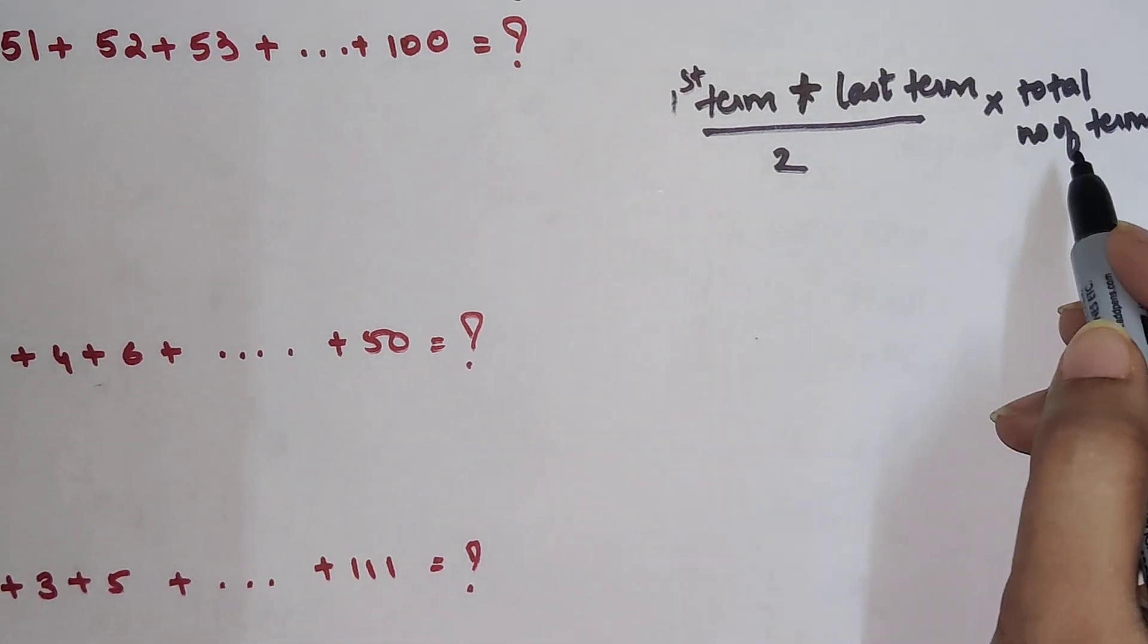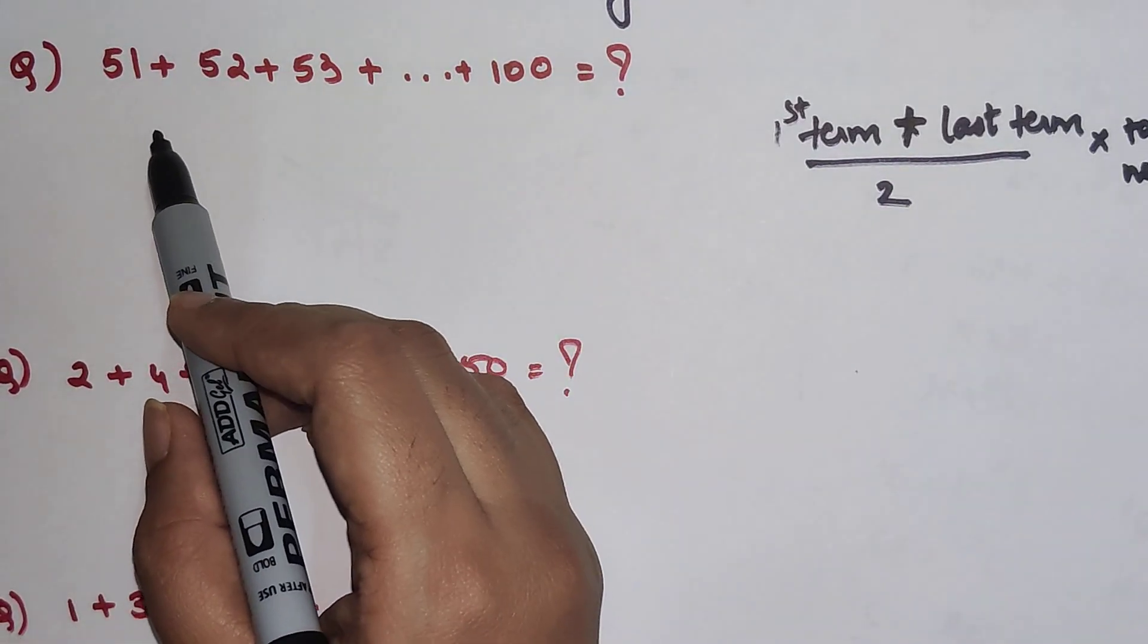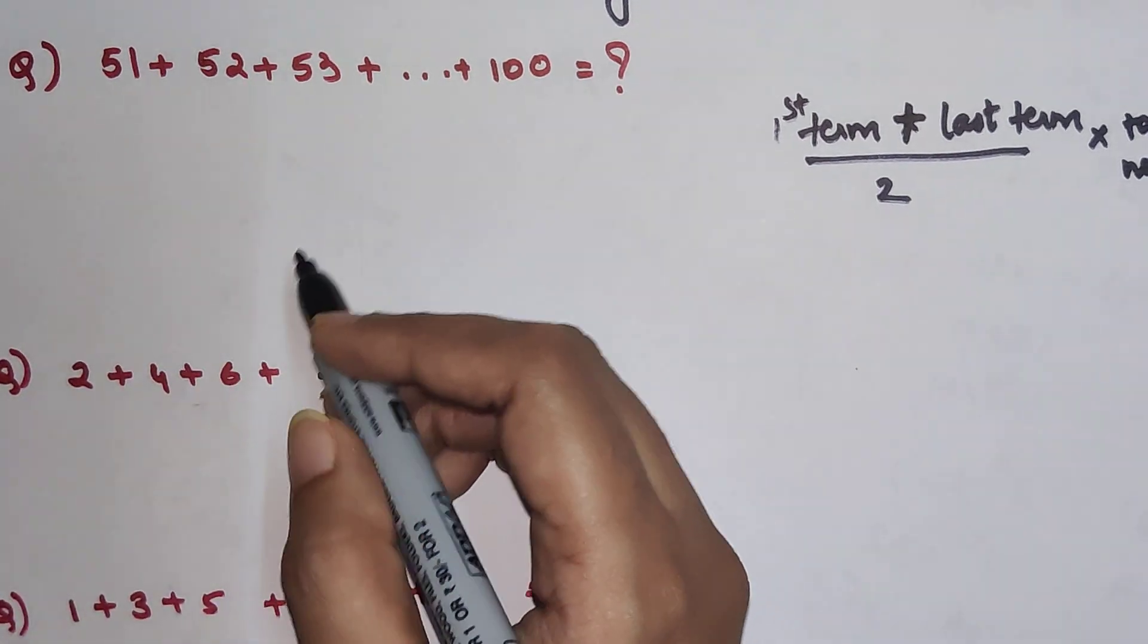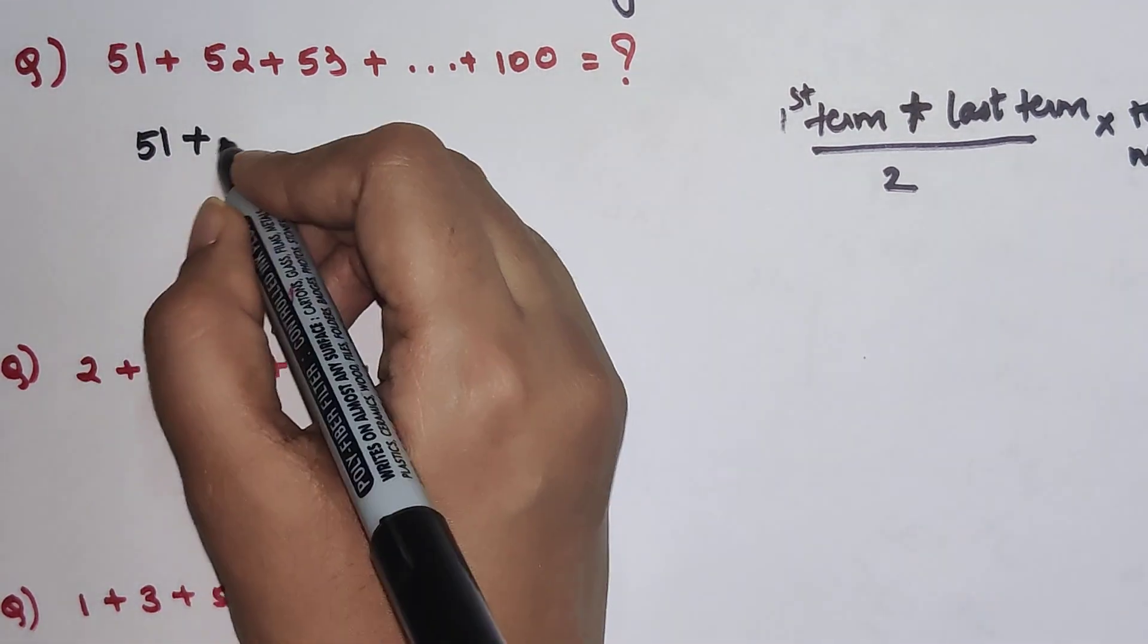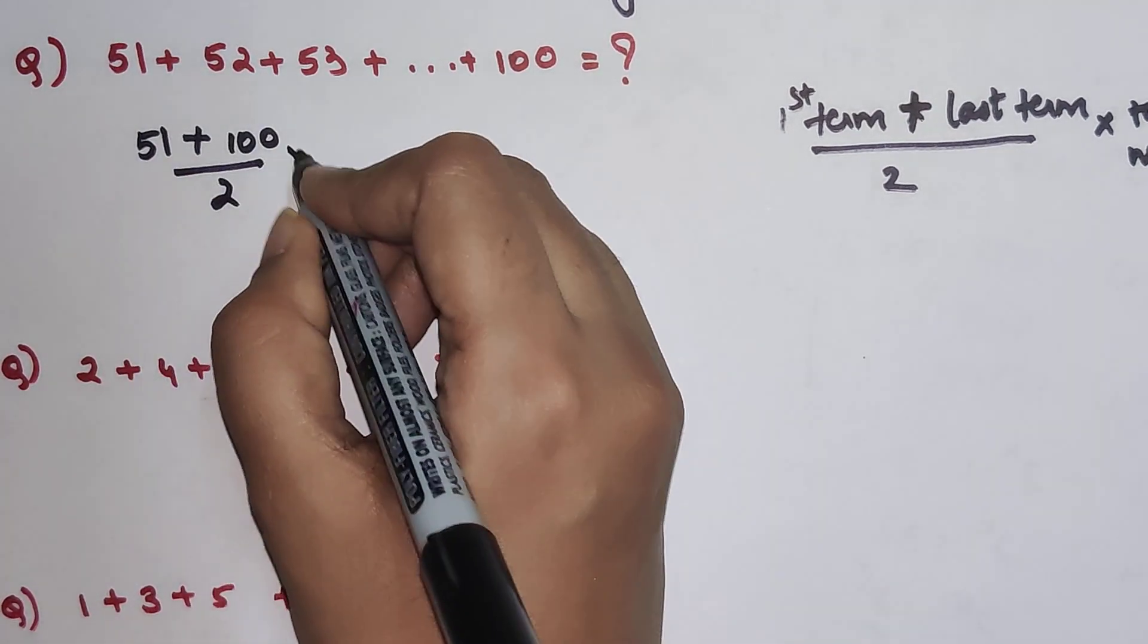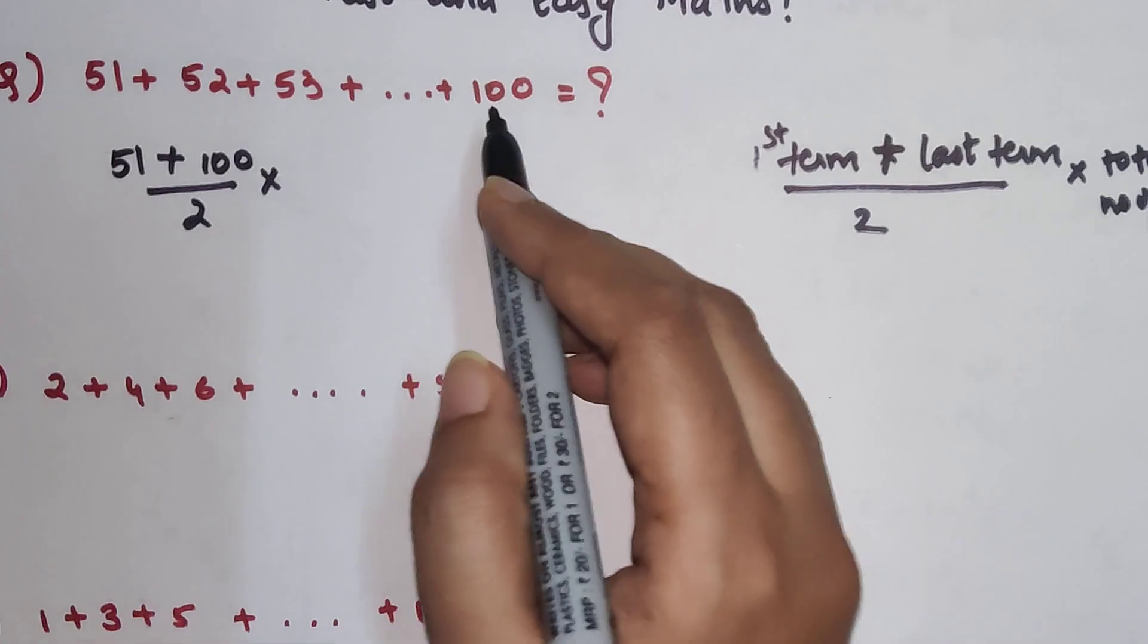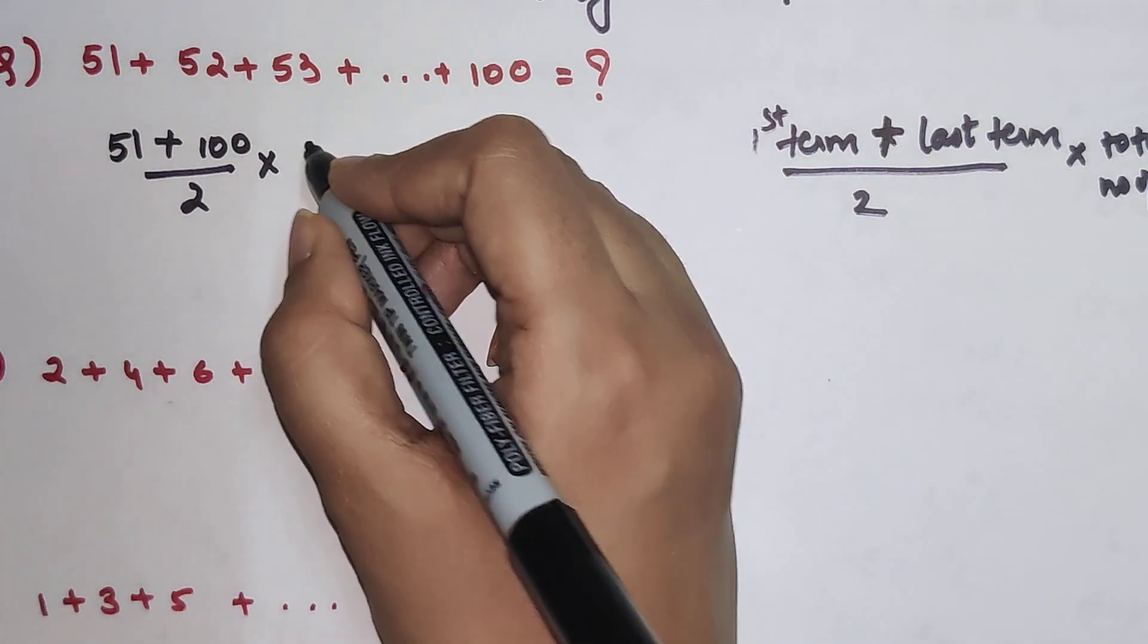In the first case, if you look, you have 51 plus 52, everything is going consecutively with no gap. When you have something like this, you will have 51 plus the last one which is 100, divided by 2, times the total number of terms. For the total number of terms, you divide this by half, so that is 50.